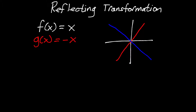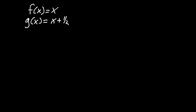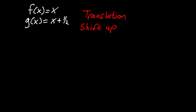Everything we've done so far has been very compartmentalized — we've had a translation all by itself, a rotation all by itself, and a reflection all by itself. But a lot of the time you're going to have combinations. You could have all three types of transformations in one function. So now let's take a look at some functions and figure out what type of transformations are being applied. Starting easy: our parent function is f of x equals x, and our new function is g of x equals x plus one-half. Hopefully you notice that all that is happening is we are adding to the x, so this is a translation — we are shifting the graph up one-half units.